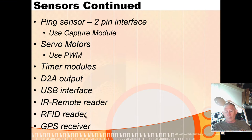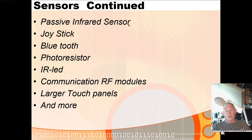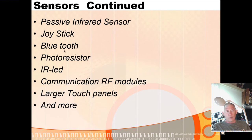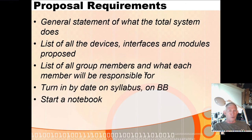I have RFID readers that are I2C interface, GPS receivers that are UART interface, passive infrared sensors, joysticks, and Bluetooth modules you can plug in instead of the CR-2102 — then you can talk to your Viva board with your cell phone on either Apple or Android. Photo resistors are on your analog board. You can send signals using an IR LED pair, there are RF modules for communication, and you can interface a touch panel. It goes on and on — there's almost no limit.